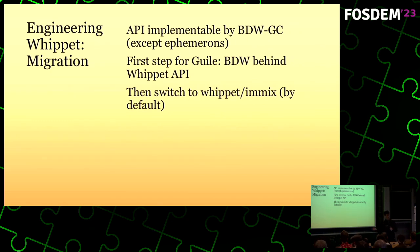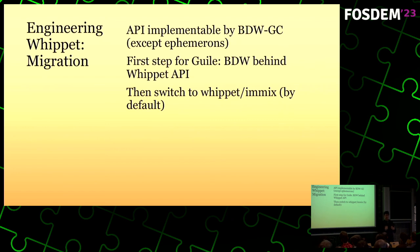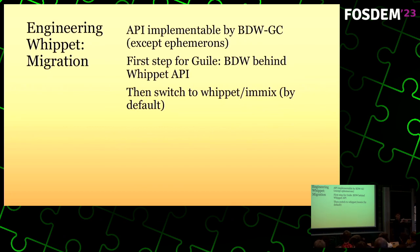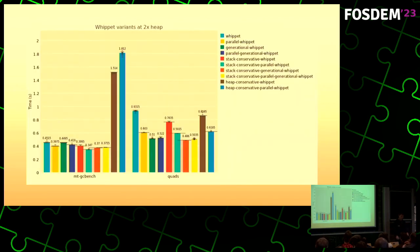When thinking about migrating Guile to Whippet — the top description kind of oversold it, saying we have a new production garbage collector in Guile. It's not there yet. This abstract API can be implemented by the current BDW collector. The first step is to switch Guile over to use the new API but still use the old collector implementation. Then we can switch to Whippet, which wouldn't require any code changes in Guile ideally.